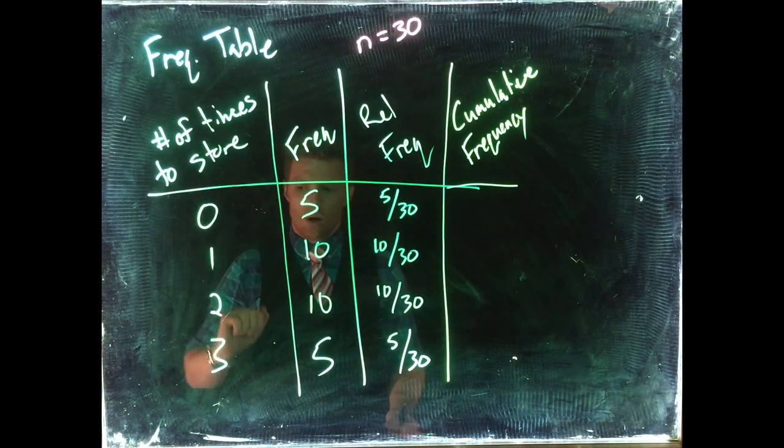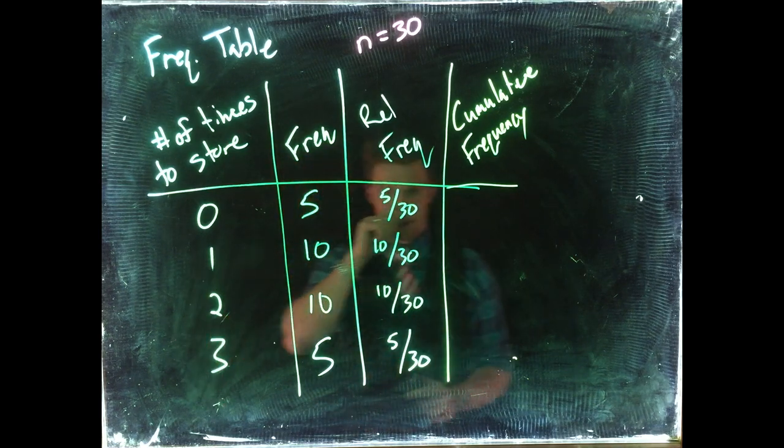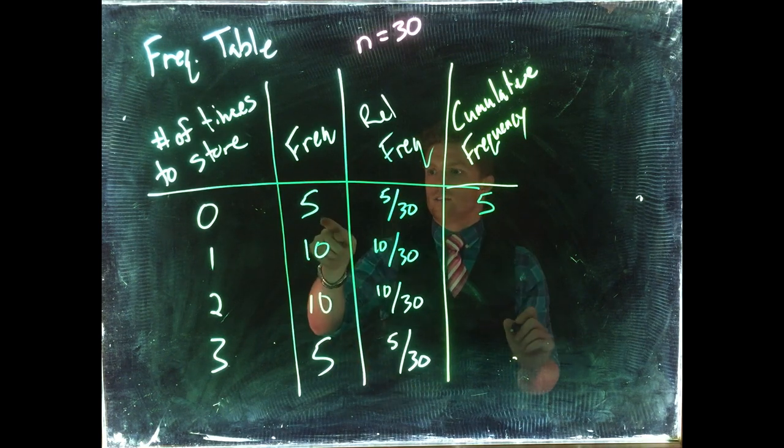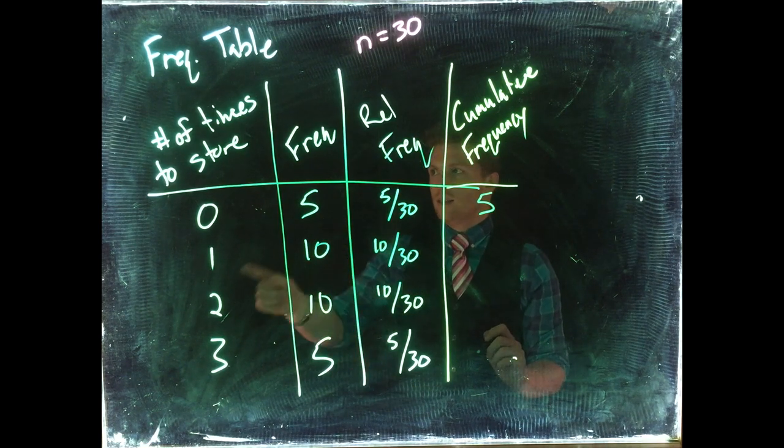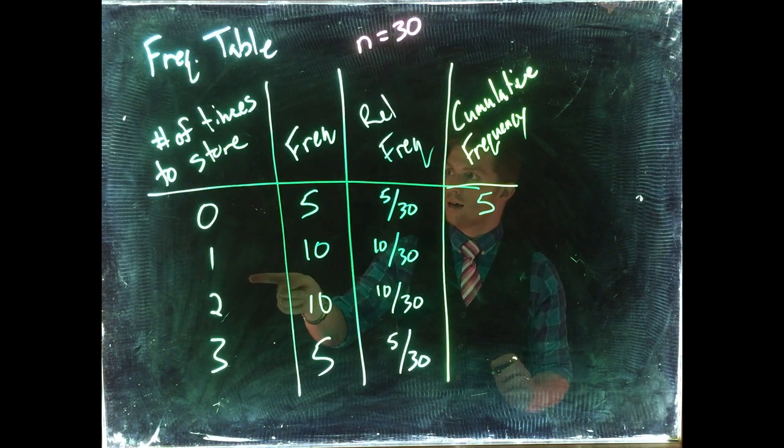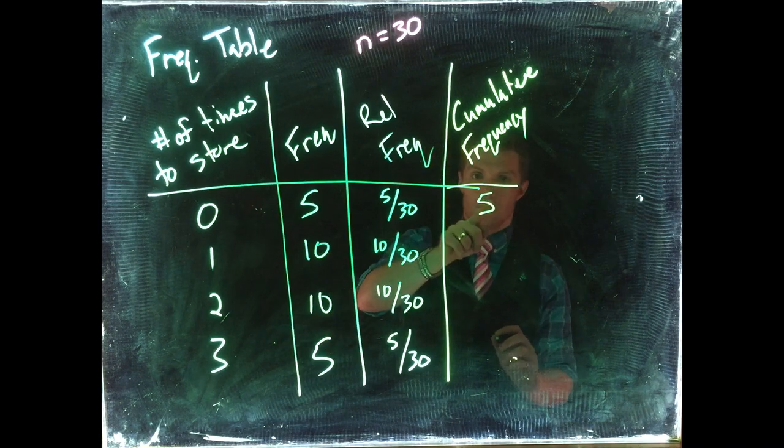How many people went to the store two times or less per week? So the first one is just going to be the same as the frequency, five. Then for the number of people who went to the store one time or less per week would be 10 plus 5, so that would be 15.